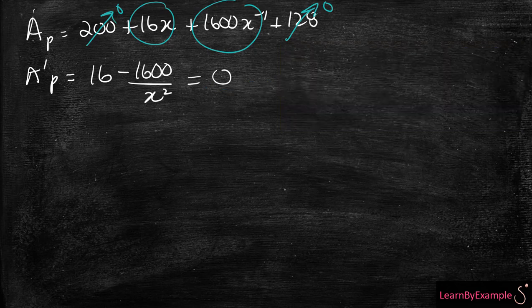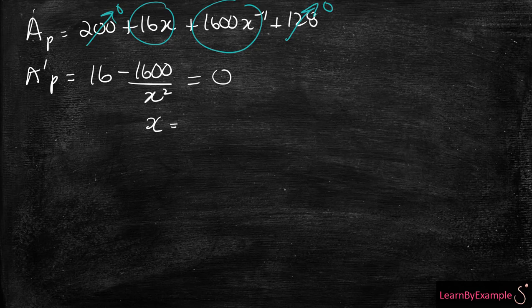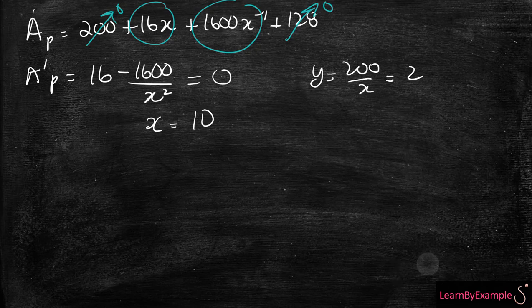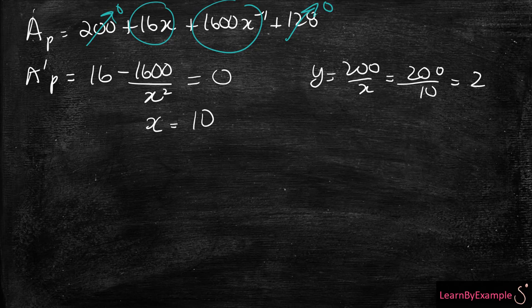So now we have to set that to 0. And basically, if you multiply that out, you're going to be left with X is equal to 10. And we know from the other equation that Y is equal to 200 over X, so Y is equal to 200 over 10, so Y is equal to 20.